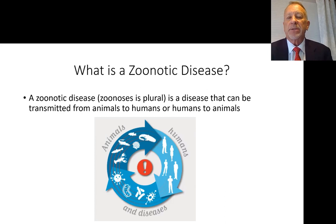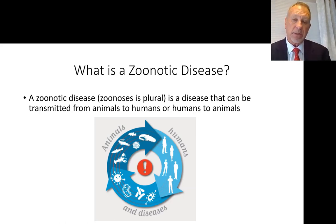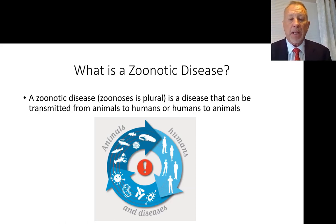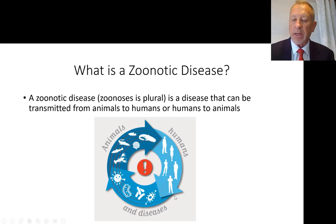If you think about it, a zoonotic disease — what does that mean? It just means it's a disease that either an animal can give to a human, or humans can give diseases to animals, and it happens all the time. And of course, the environmental component is the wild card that we're going to talk about, and what you all interact with on a daily basis.